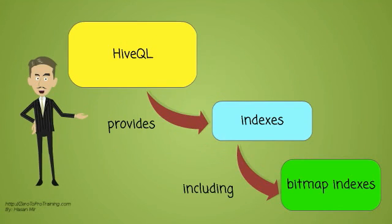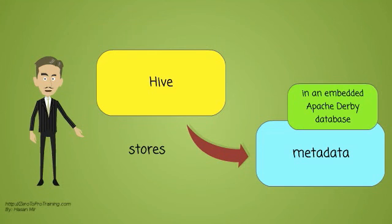To accelerate queries, it provides indexes, including bitmap indexes. By default, Hive stores metadata in an embedded Apache Derby database.